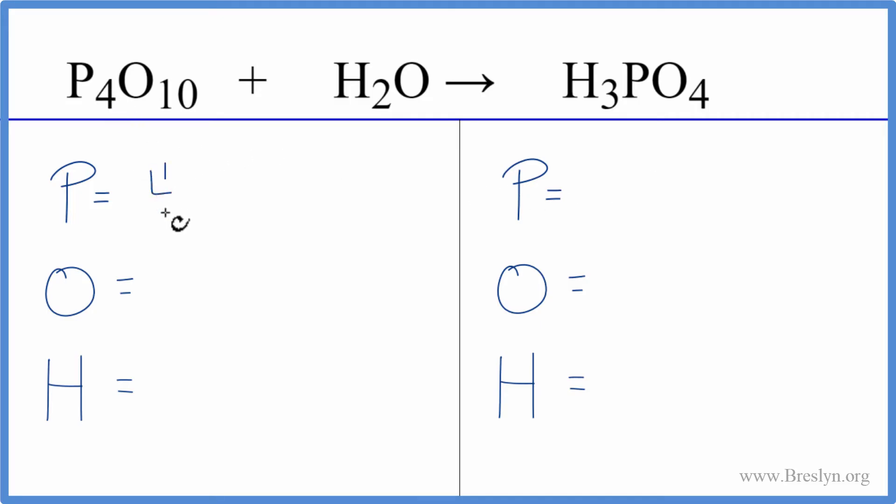We have four phosphorus atoms, ten oxygen atoms. Don't forget this oxygen out here. That gives us 11, and then we have two hydrogen atoms.